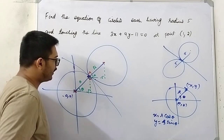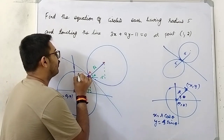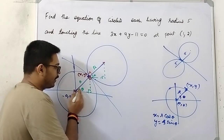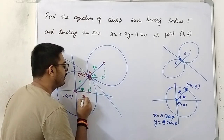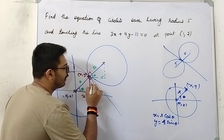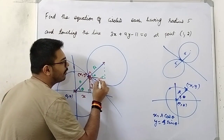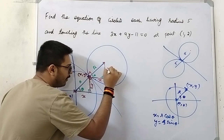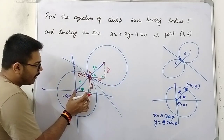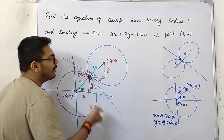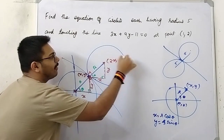If this point has coordinates (x, y), then this particular distance will be x units and this particular distance will be y units. Since this is x units, the other side will also equal x units, and this will also equal y units. So if this point is (x, y), this other point will have x + x = 2x as its x-coordinate and 2y as its y-coordinate.